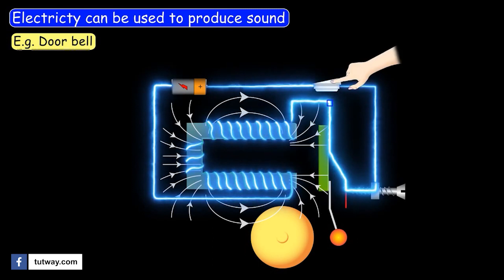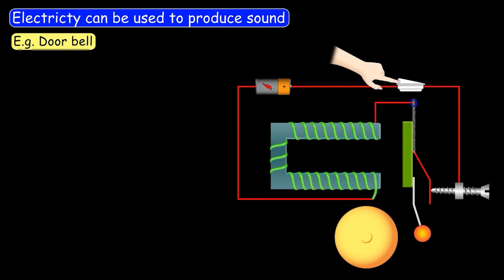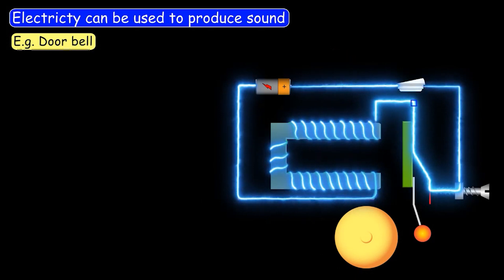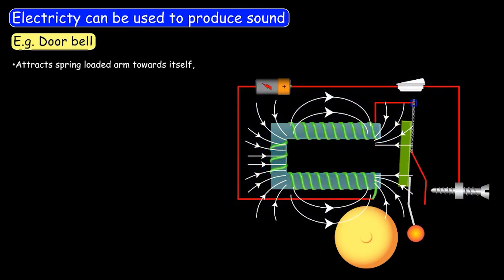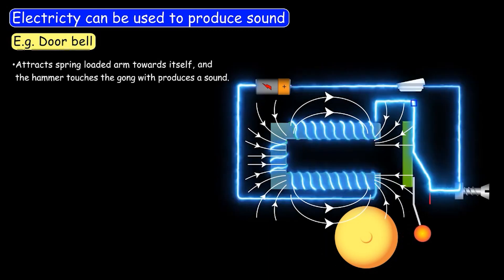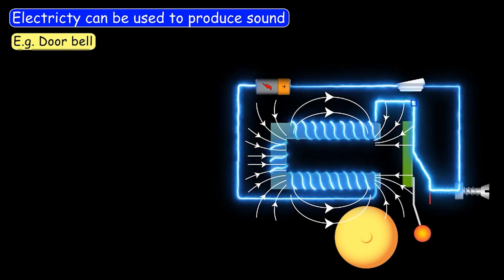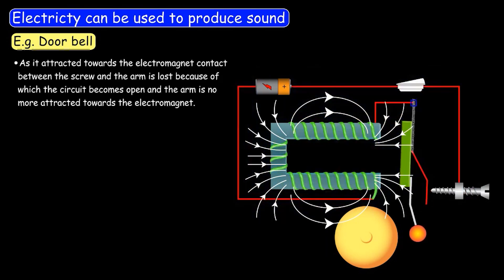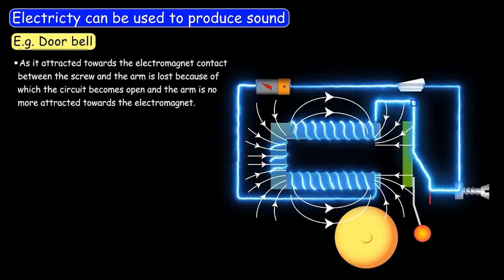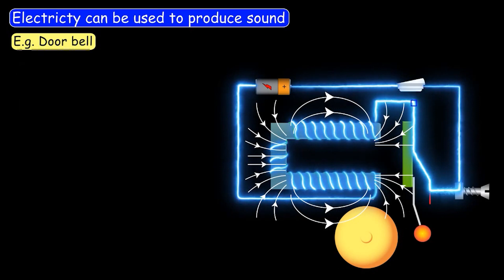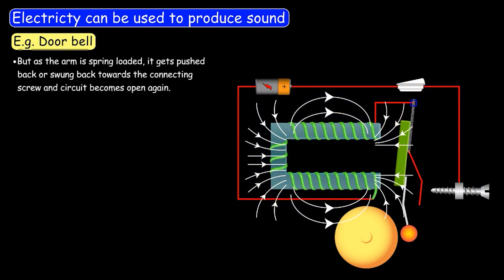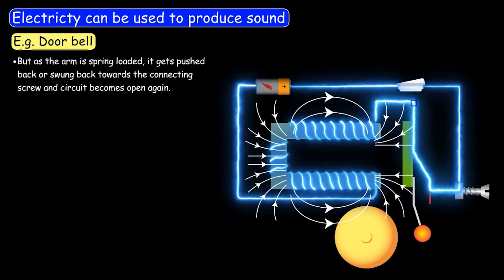Let's repeat what is happening: as we turn on the switch, four things happen in a cyclic manner. First, the iron piece becomes an electromagnet and attracts the spring-loaded arm towards itself, and the hammer touches the gong, which produces a sound. But as the arm is attracted towards the electromagnet, contact between the screw and the arm is lost, and the circuit becomes open. The arm is no longer attracted, but since it is spring-loaded, it gets pushed back towards the connecting screw, and the circuit closes again. In this way, electricity is continuously producing sound energy.